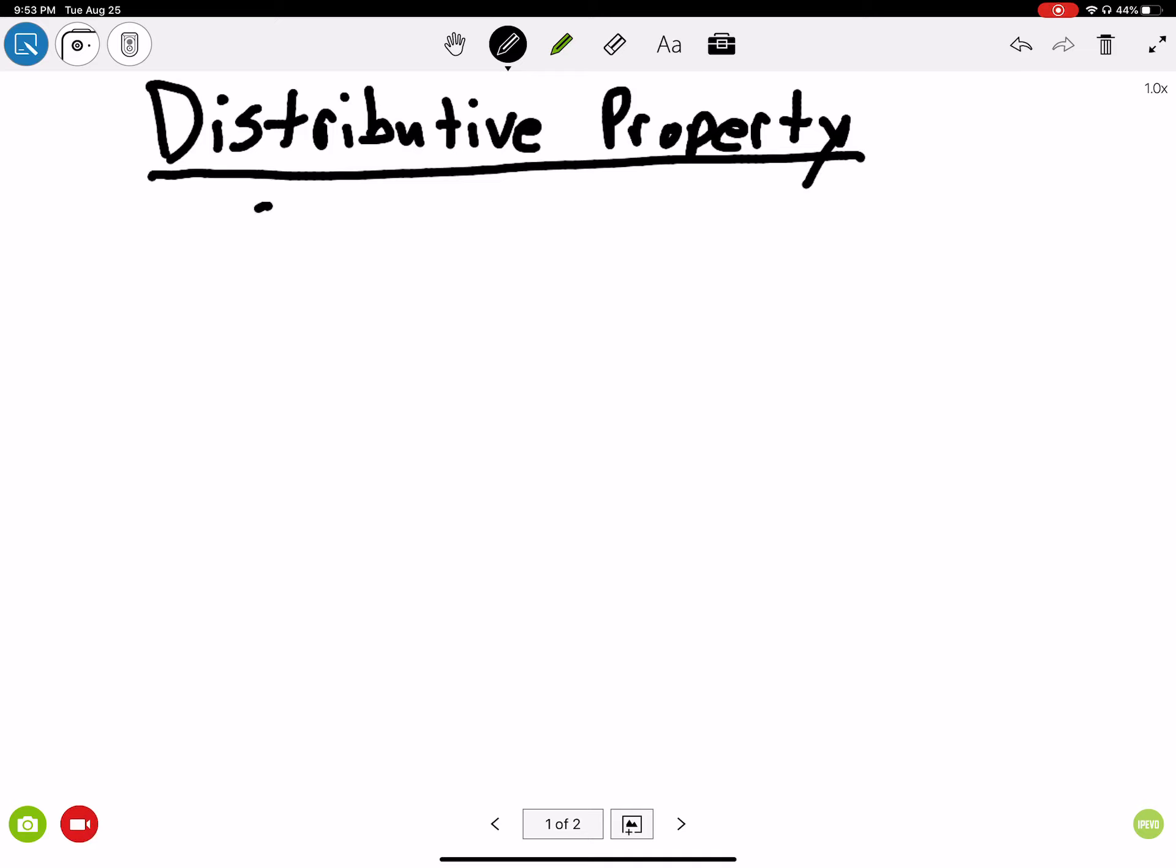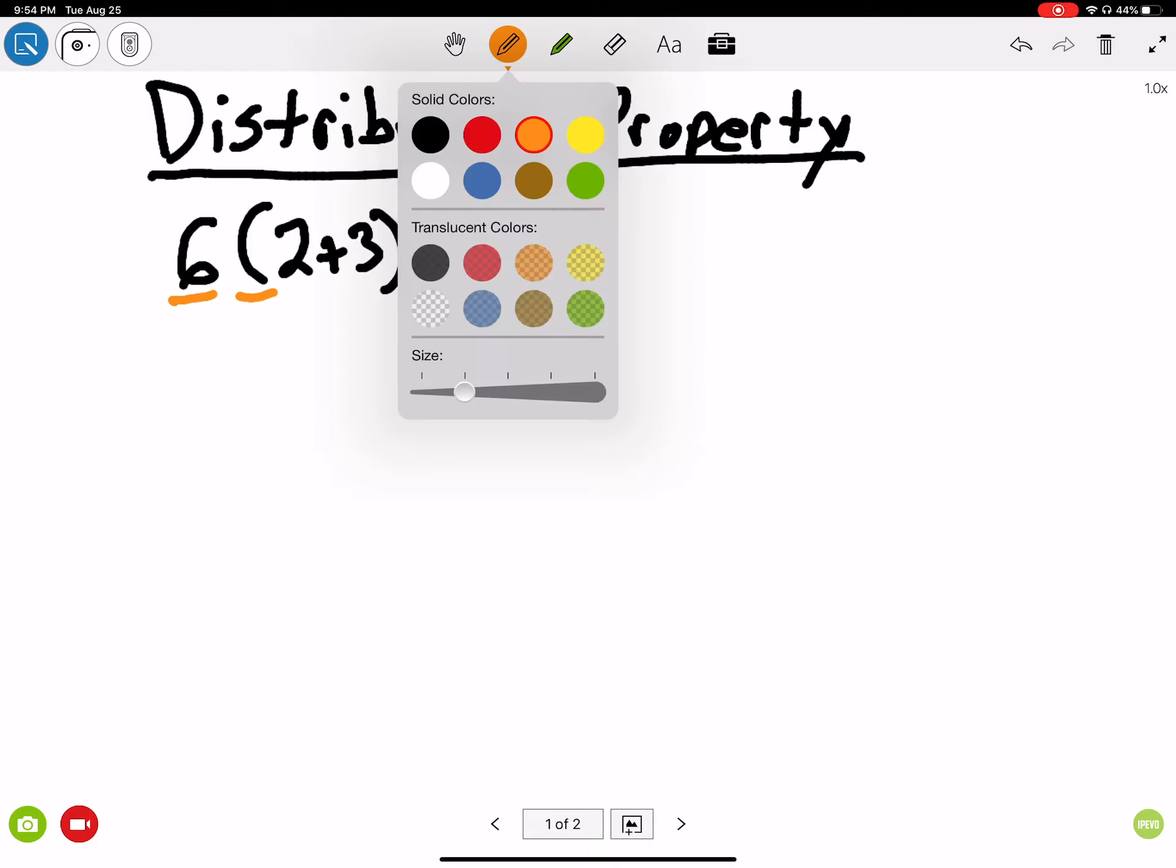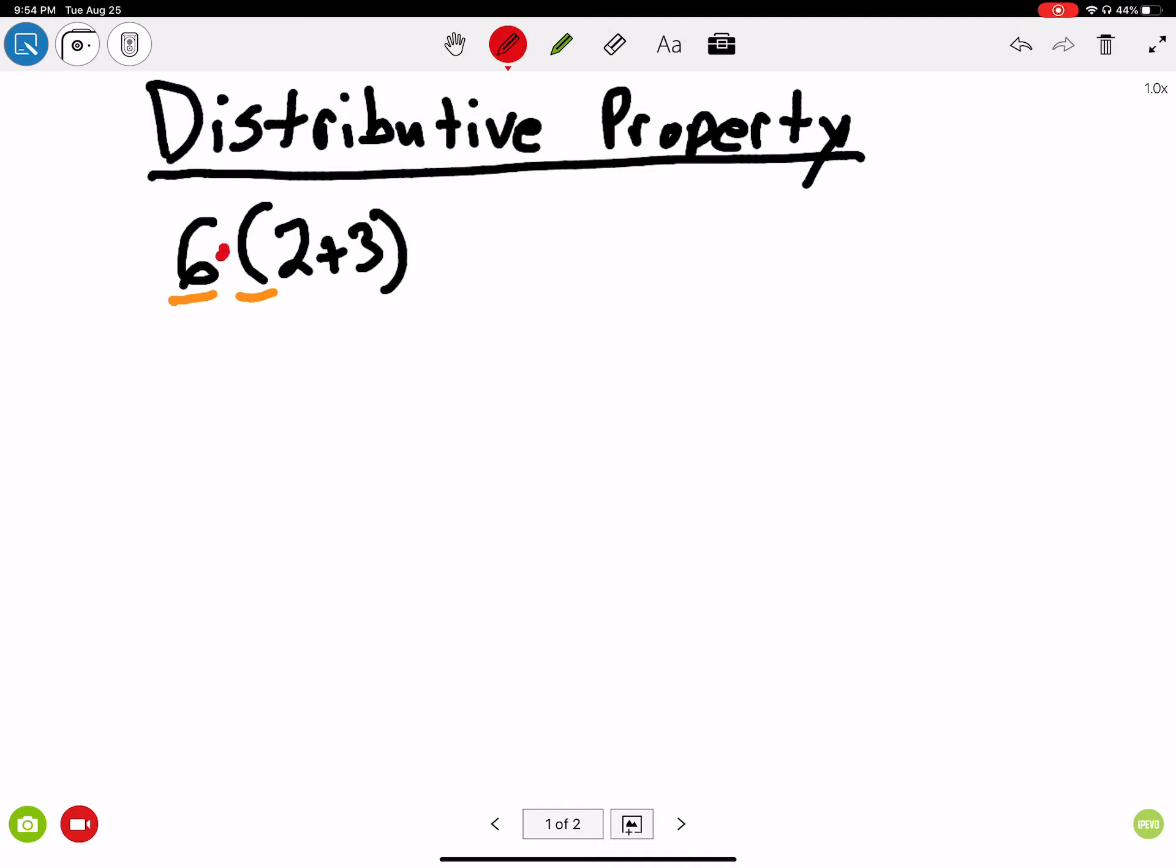When I have something in parentheses, let's say I have 2 plus 3, and I have a number outside of parentheses, let's say I put a 6 here. Any time you see a number outside of parentheses with nothing between the number and one of the parentheses, that means that you've actually got an imaginary multiplication symbol between the number and the parentheses.